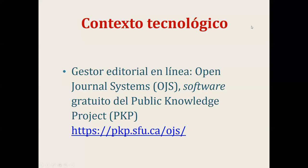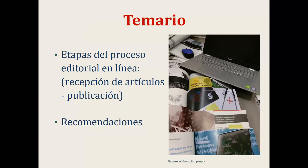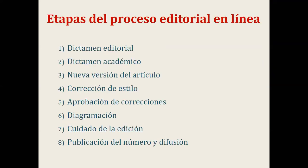El OJS es un gestor editorial para revistas. El temario de hoy cubre las etapas del proceso editorial, desde que se reciben los originales —los artículos propuestos para publicación— hasta la publicación del número, más algunas recomendaciones prácticas. Dentro de las etapas del proceso editorial en línea, se desglosan ocho fases que veremos una por una.